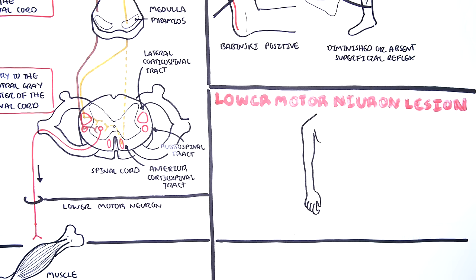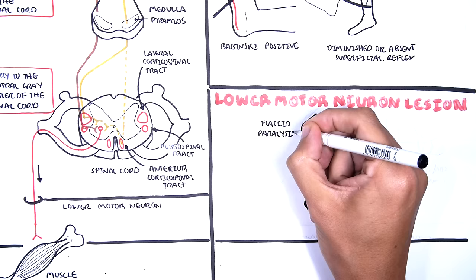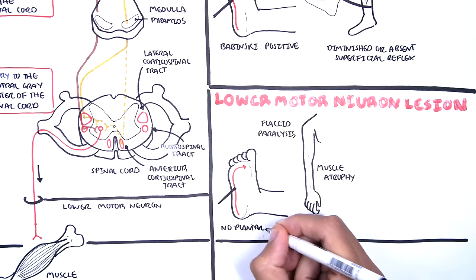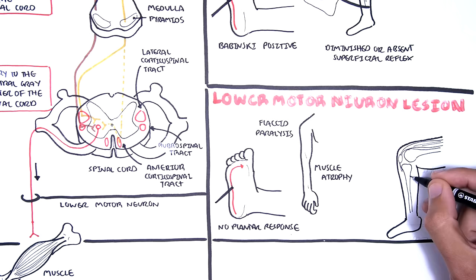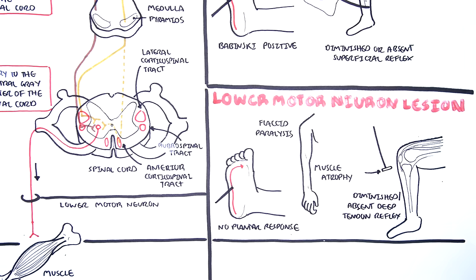With lower motor neuron lesions, there is muscle atrophy, because the actual neurons which supply the muscles are not reaching them. Flaccid paralysis is present. There is a normal or absent plantar response, because no signal is arriving at the muscles. Similarly, there are absent tendon reflexes. You can also see fasciculations of the affected muscle, where single muscle fibers are still stimulated. The reason is that there is still some transmission from lower motor neurons which are not fully injured.